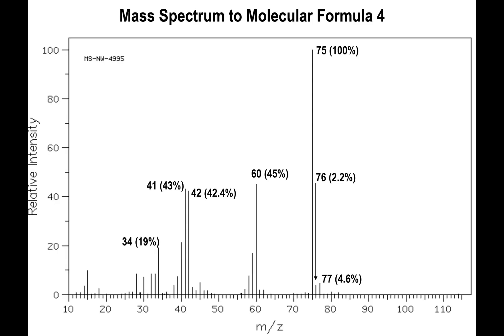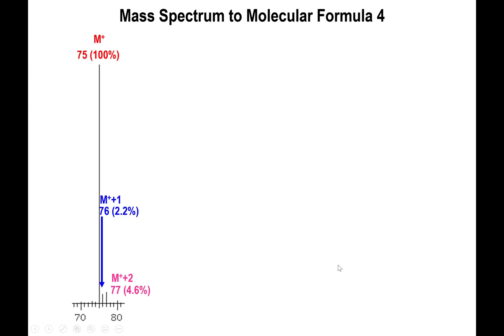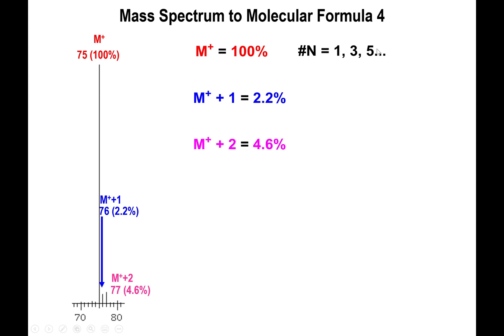Let's do another example. Looking at the mass spectrum, peaks appear at m/z 75, 76, and 77. The peak at 75 is the highest, already at 100%, so no rescaling is needed. Therefore 75 is the M+ peak, 76 is M+1, and 77 is M+2. Importantly, the M+ peak is odd, indicating an odd number of nitrogens. The M+1 value is 2.2% and the M+2 value is 4.6%.